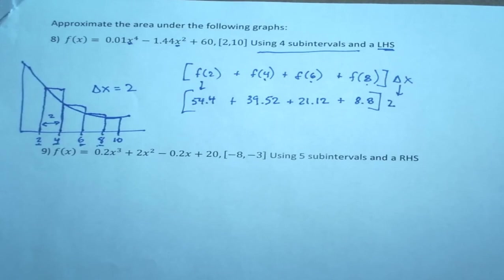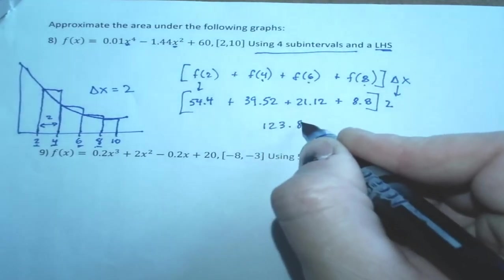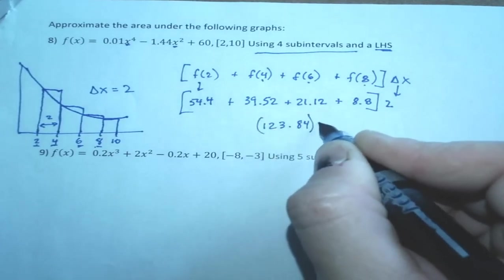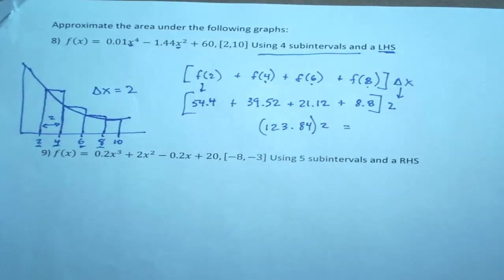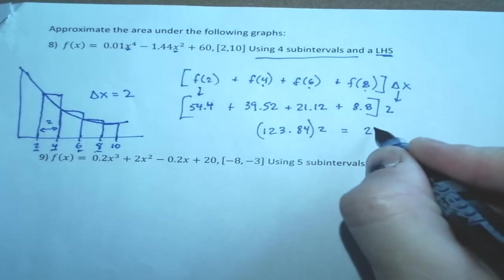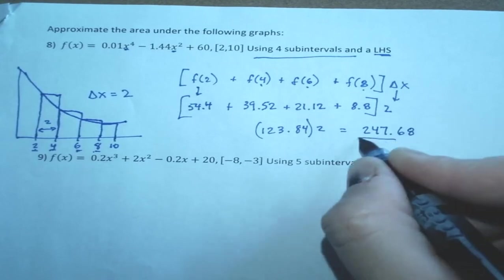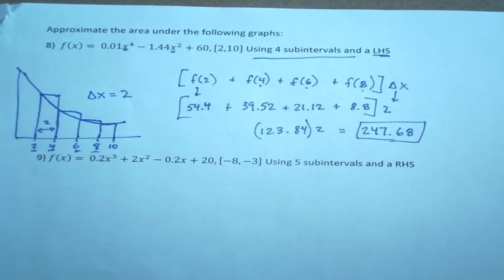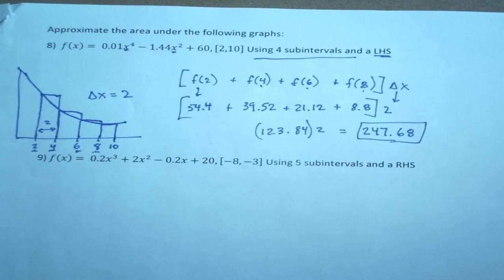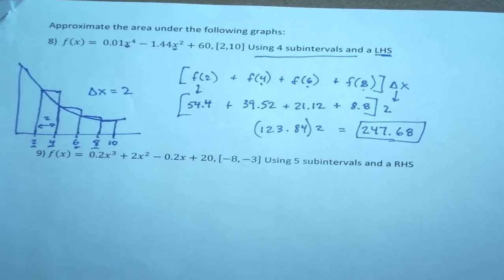So we're going to add those up. We're going to add 54.4 plus 39.52 plus 21.12 plus 8.8, and I get 123.84. And we're going to multiply that by 2, and we get 247.68. And that's a left-hand sum with four subintervals. Four subintervals from 2 to 10.